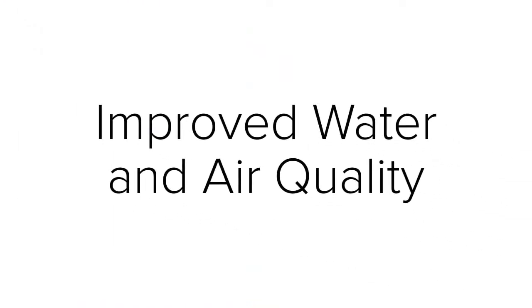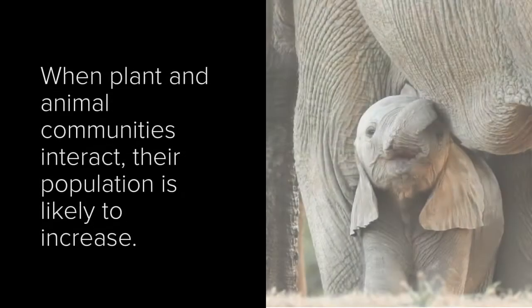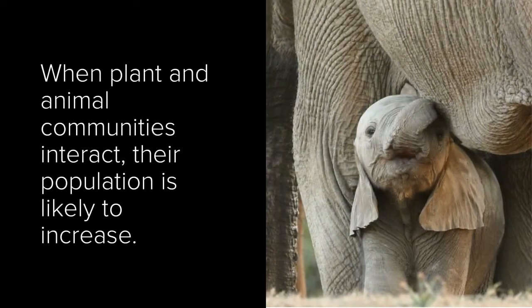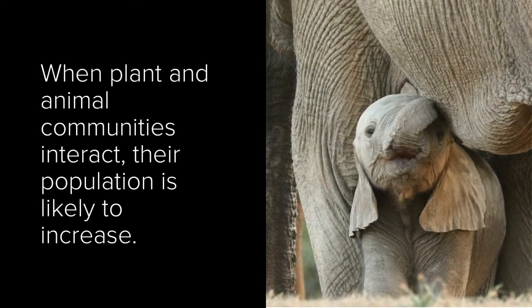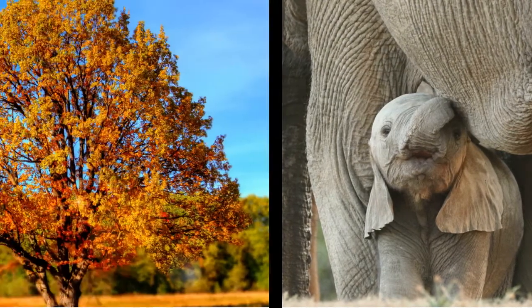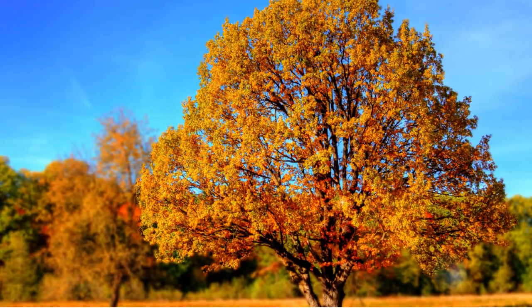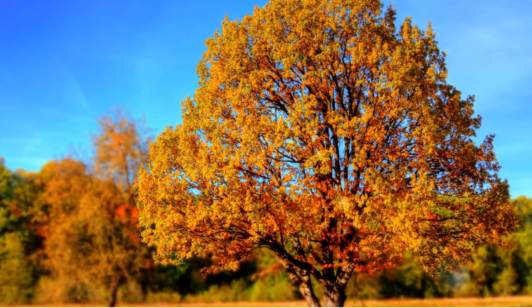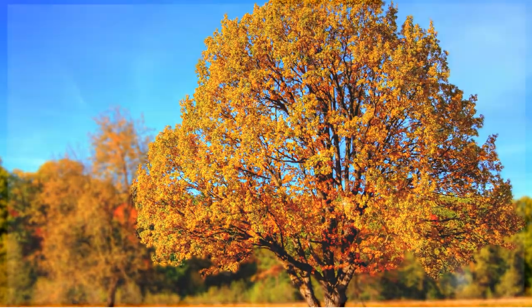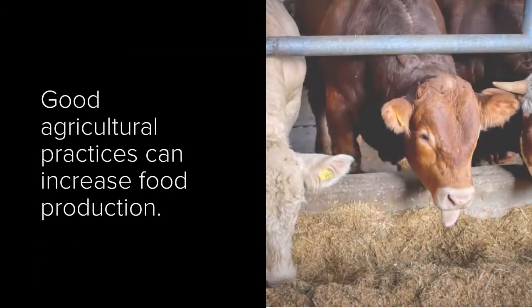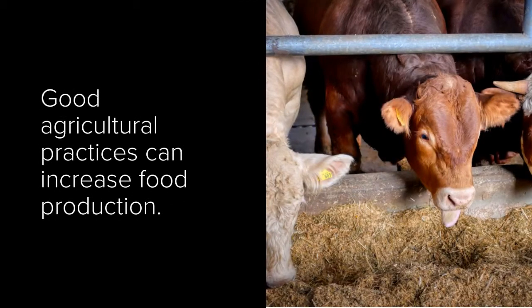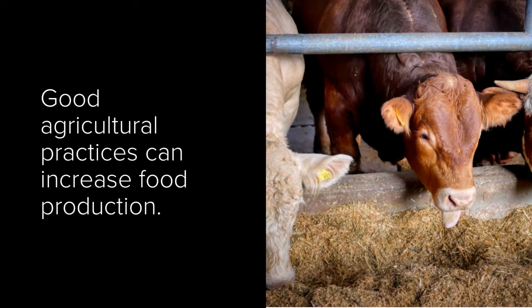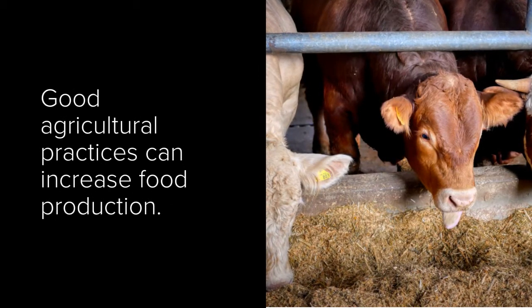Two, improved water and air quality. When plant and animal communities interact, their population is likely to increase. Trees can clean the air that we breathe, and this also prevents acidity in water bodies, since the amount of carbon dioxide in the atmosphere will be minimal. Three, food security. Good agricultural practices can increase food production — plants won't lack pollinators, and neither will animals lack food.